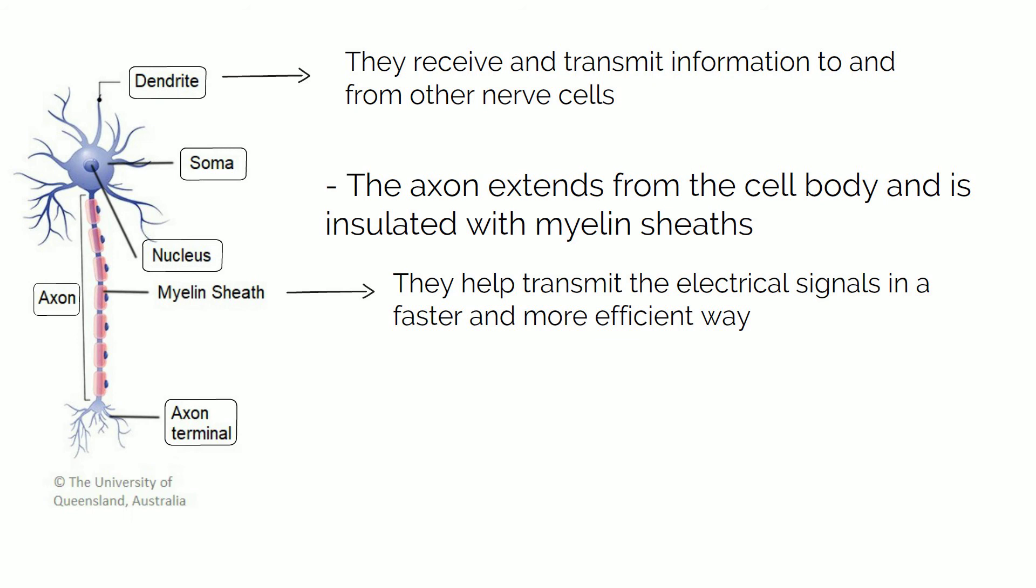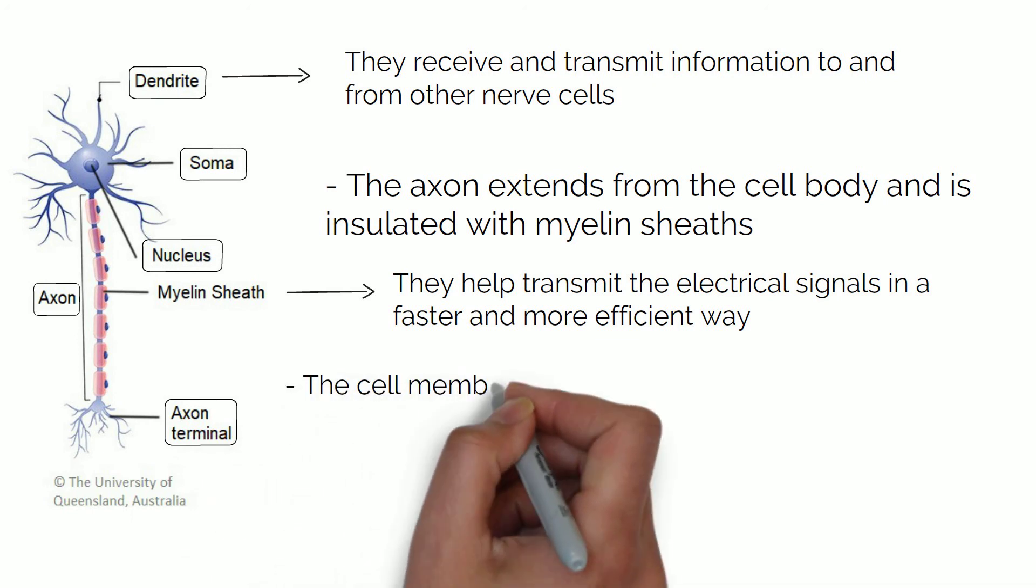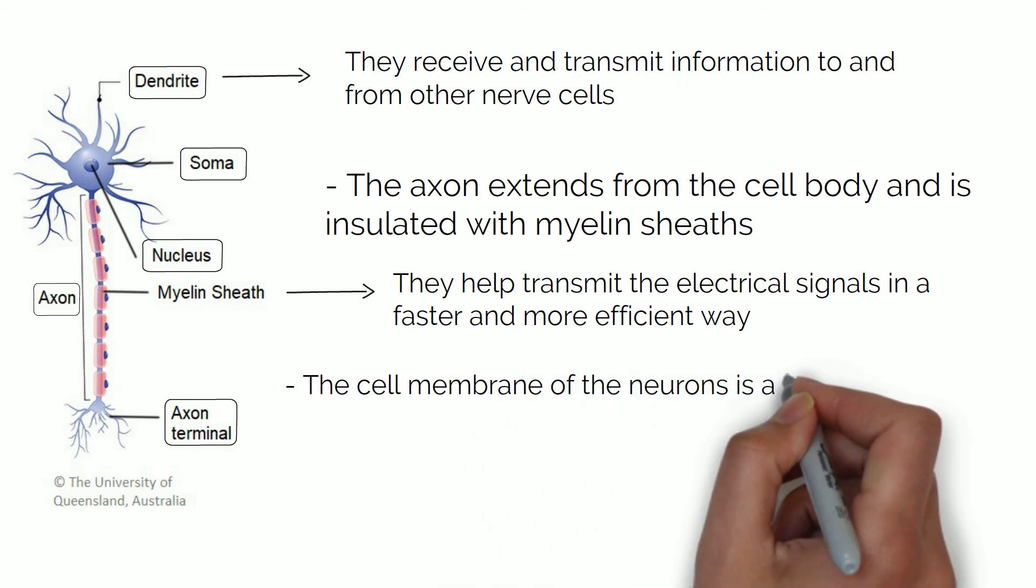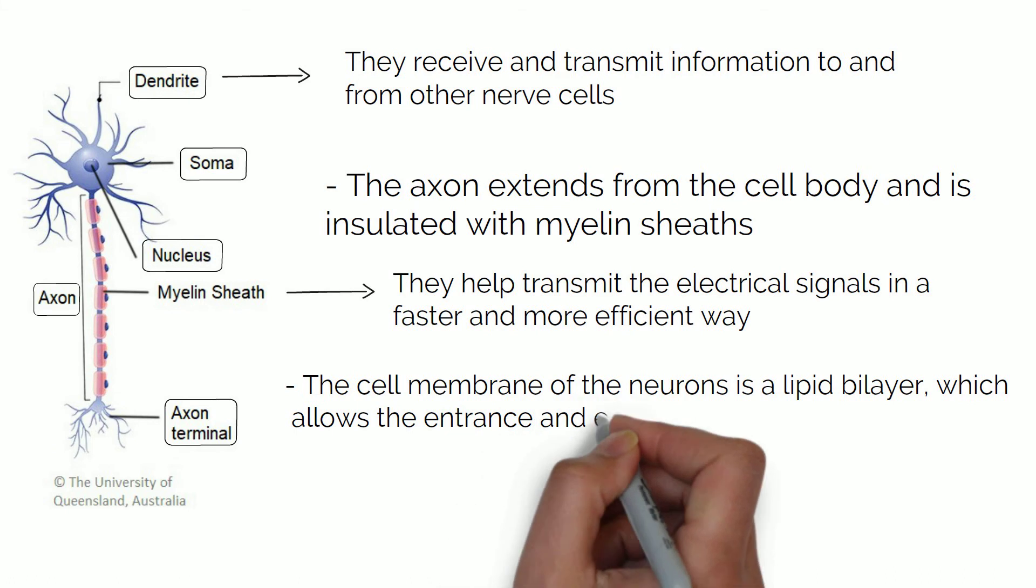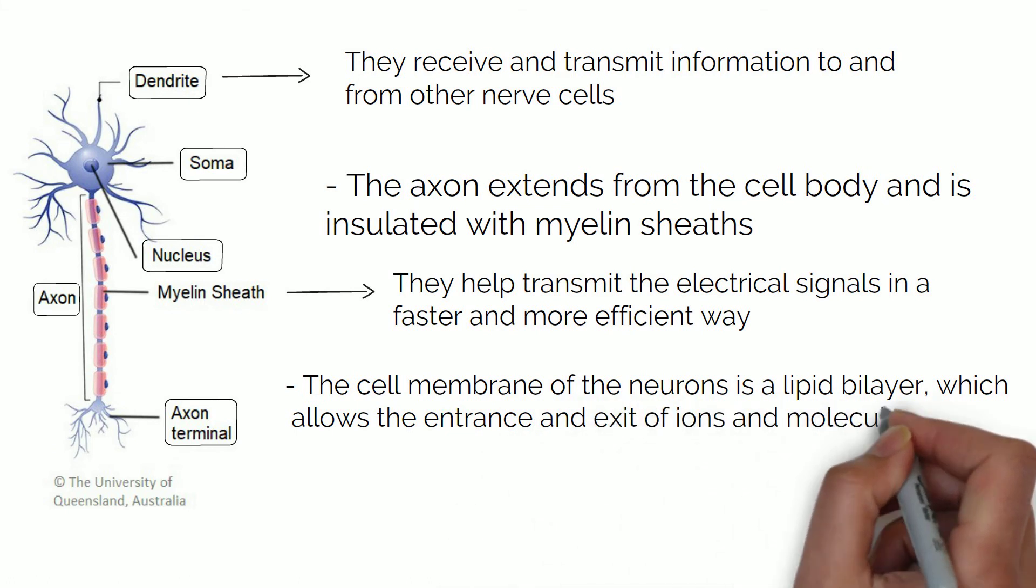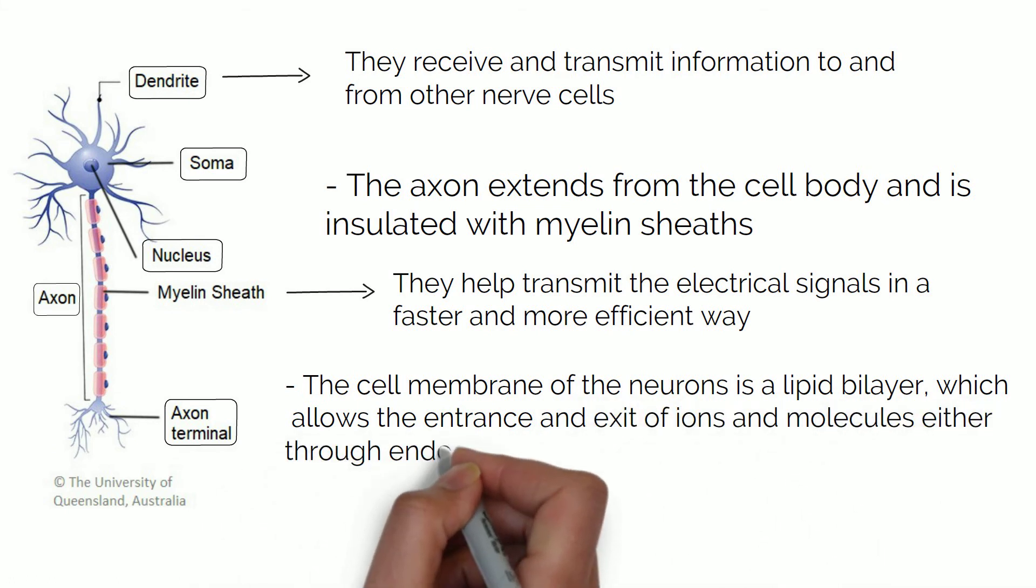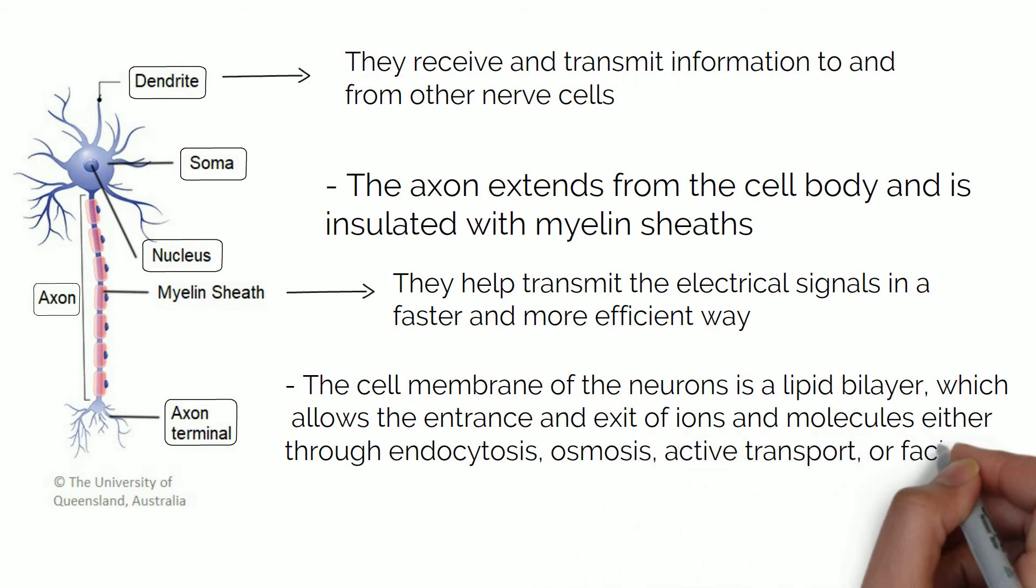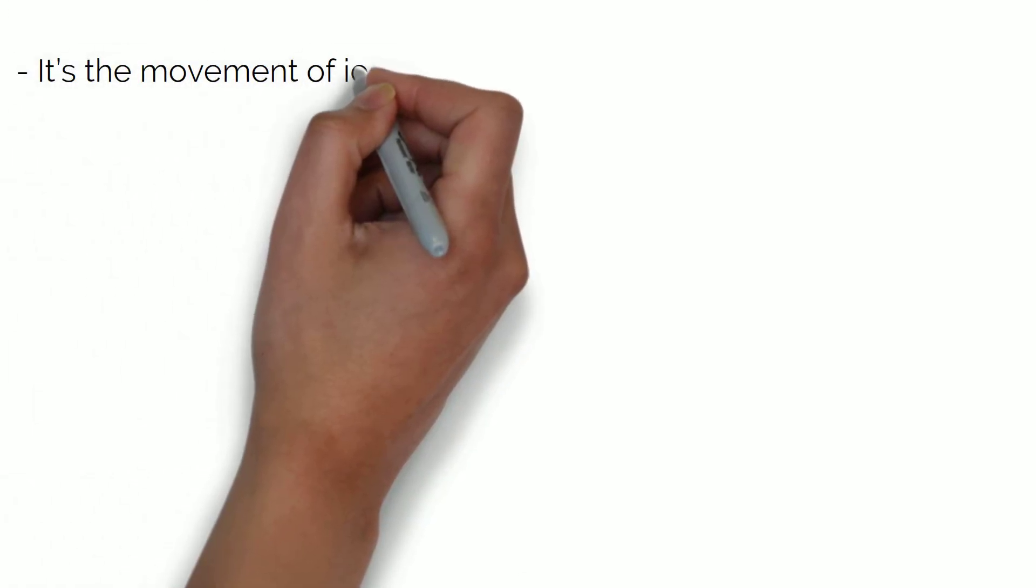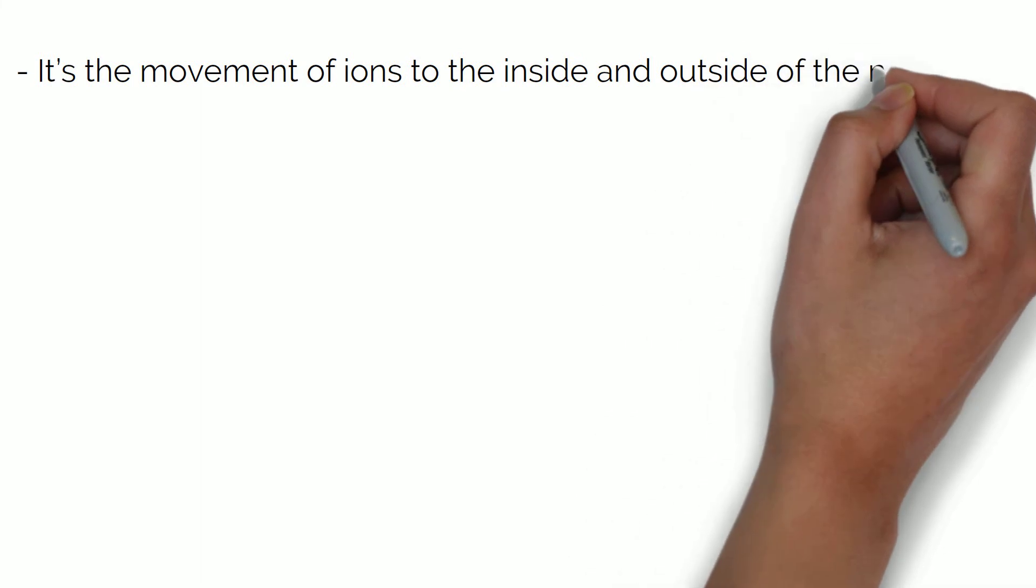The cell membrane of the neurons is the same as any other eukaryotic cell. It is a lipid bilayer which allows the entrance and exit of ions and molecules either through endocytosis, osmosis, active transport, or facilitated diffusion.